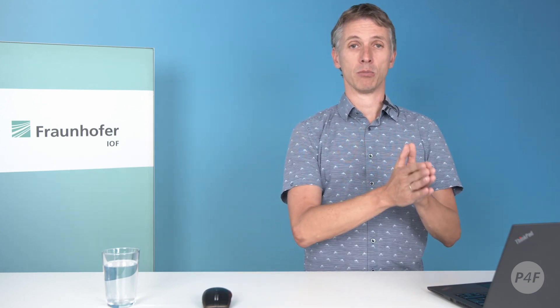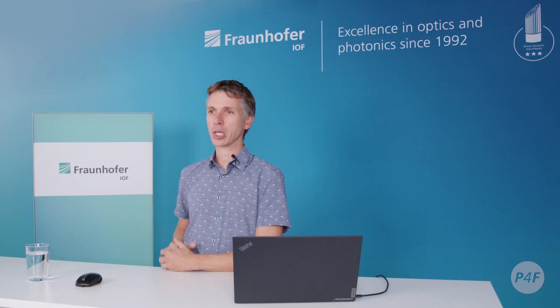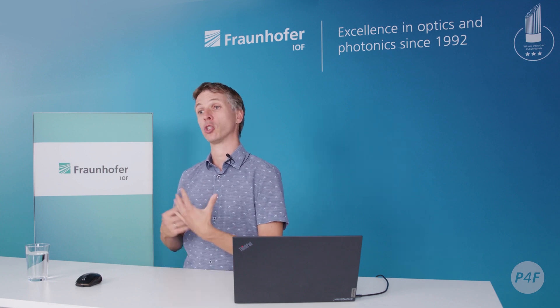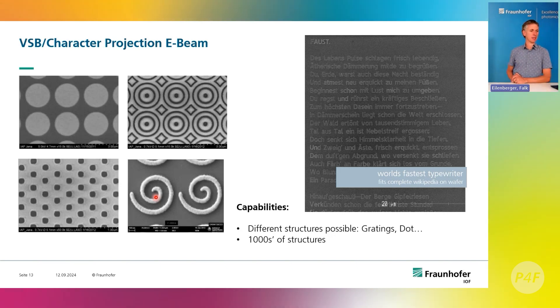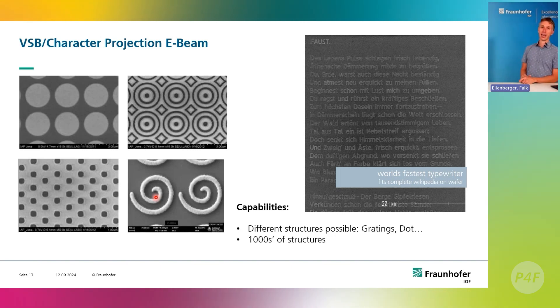The machine can translate metasurface designs — arrangements of meta atoms — onto scale. To highlight the flexibility, we can use it as a microscale typewriter that types roughly 2 million letters per second. With this capability we can fit the entirety of the German Wikipedia onto half of a 300 millimeter wafer and still have some space left for a signature.